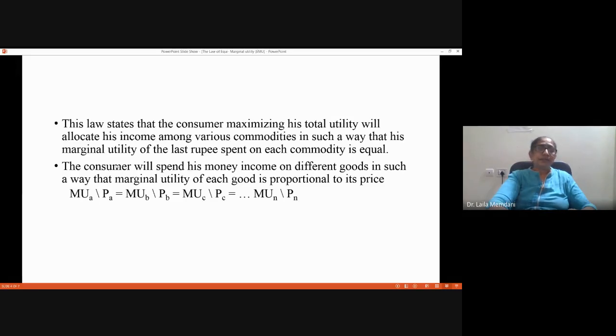The second condition: the consumer will spend his money income on different goods in such a way that marginal utility of each good is proportional to its price. So MU_A / P_A = MU_B / P_B = ... = MU_n / P_n.